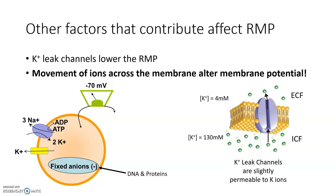Third, the membrane has protein channels that are open and leak potassium ions out of the cell. Remember, there is a high concentration of potassium ions inside the cell and a low concentration outside. If we apply what we know about gradients, potassium will move out of the cell if there is an appropriate channel. Remember that potassium ions are positively charged, so when potassium leaves the cell, the inner part of the membrane becomes more negative, leading to a more negative resting membrane potential.